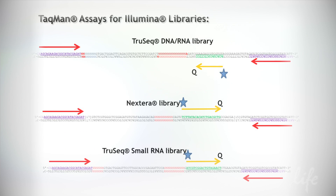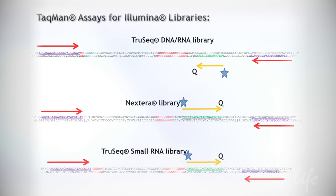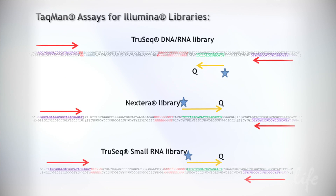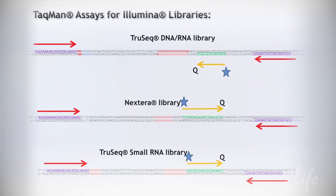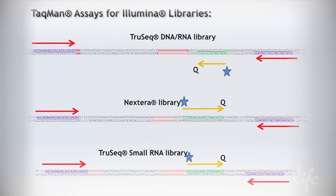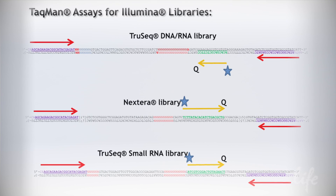The quantifications that we're doing right now are for next-generation sequencing libraries, which are derived from a number of different sources. They can be genomic DNA — whole genomes that we're trying to sequence — or they can be derived from populations of RNA molecules, looking at gene expression studies.